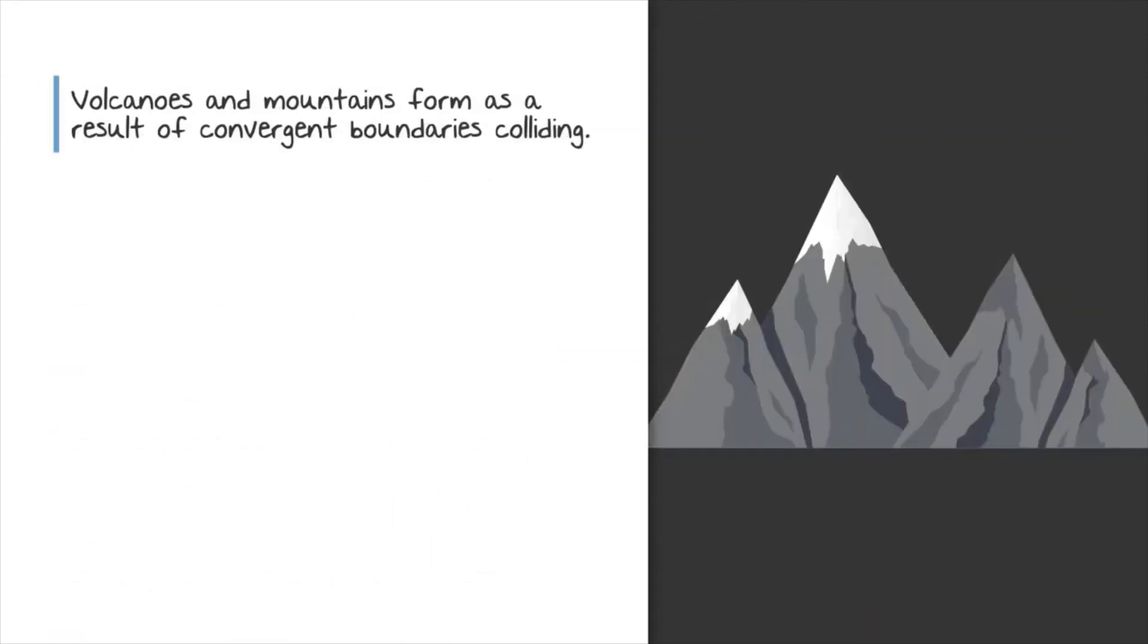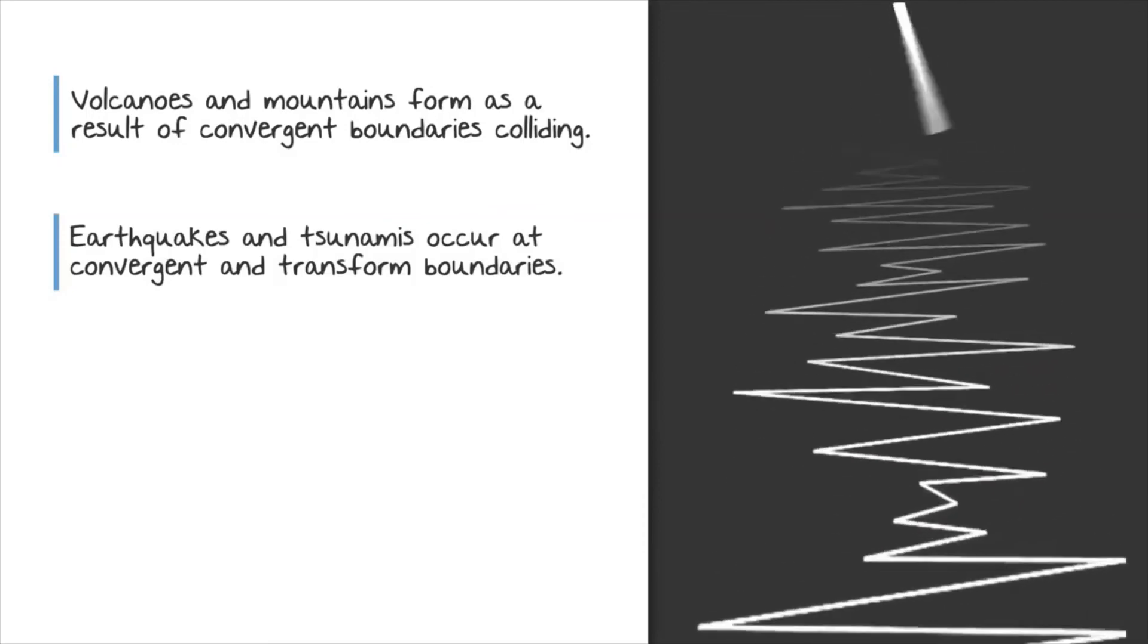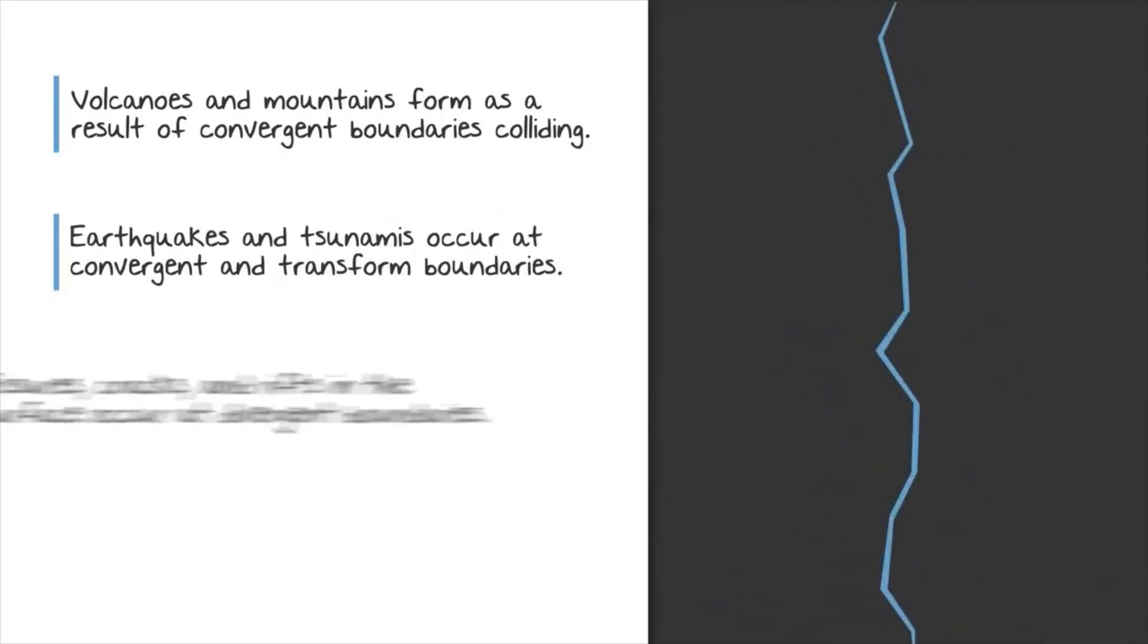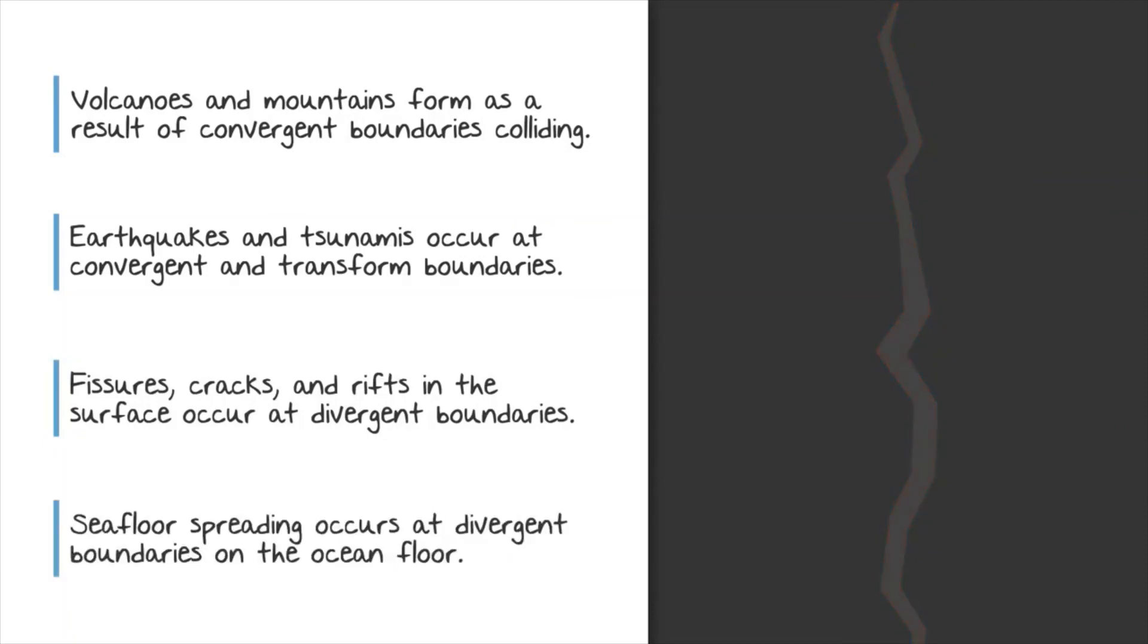Volcanoes and mountains form at convergent boundaries. Earthquakes and tsunamis can occur at both convergent and transform boundaries. Fissures and large cracks in the surface occur when two plates move apart at a divergent boundary, and seafloor spreading occurs at divergent boundaries located at the ocean floor.